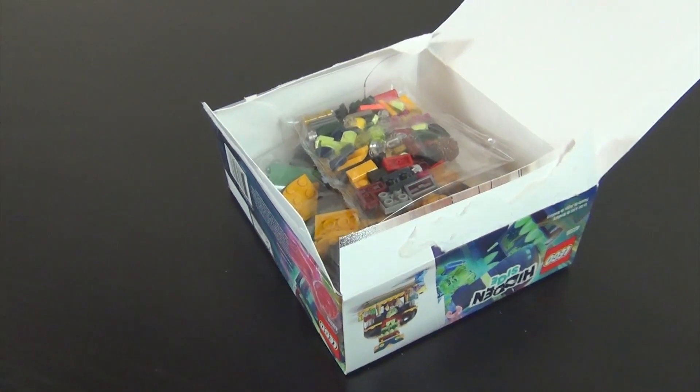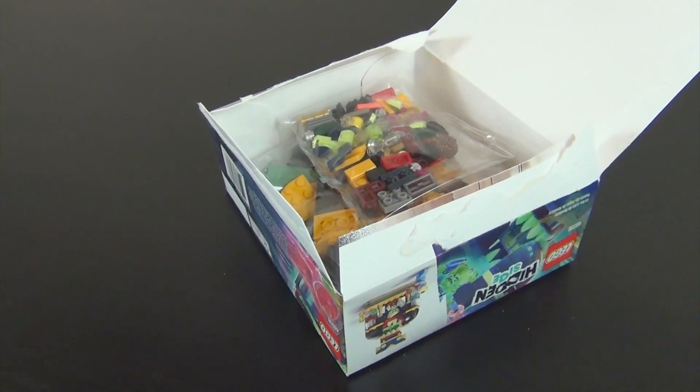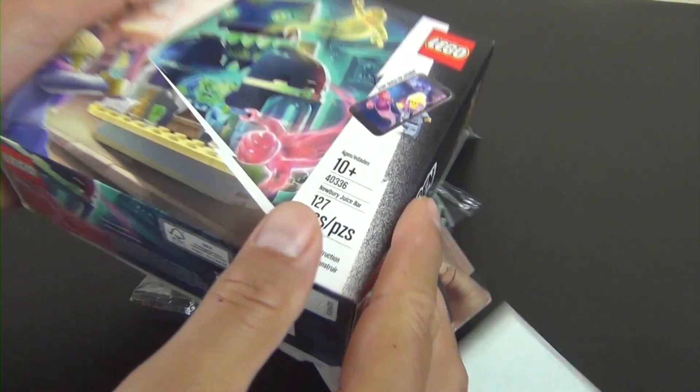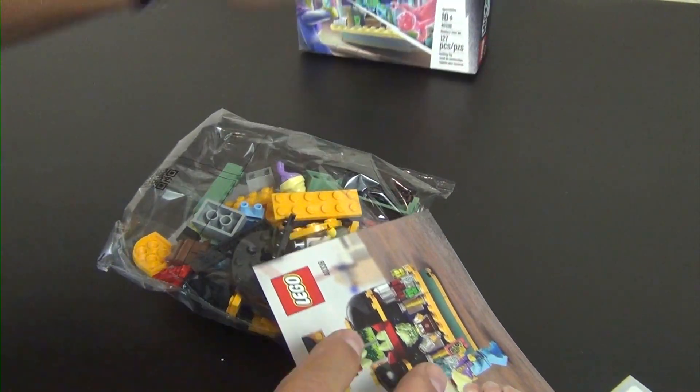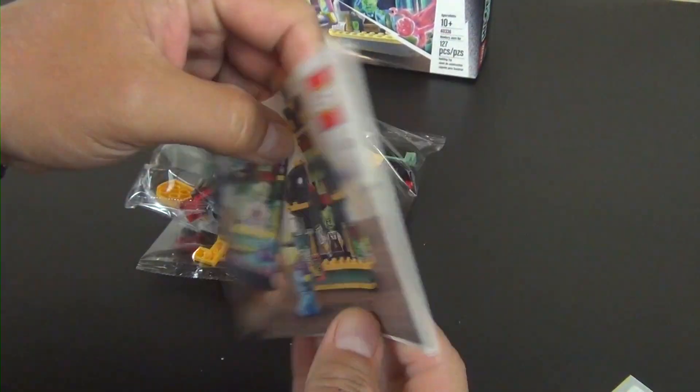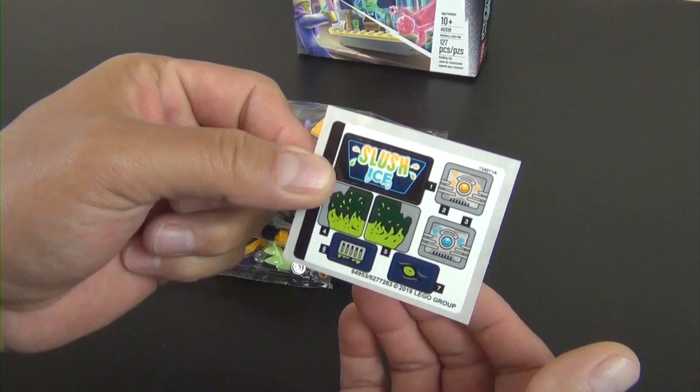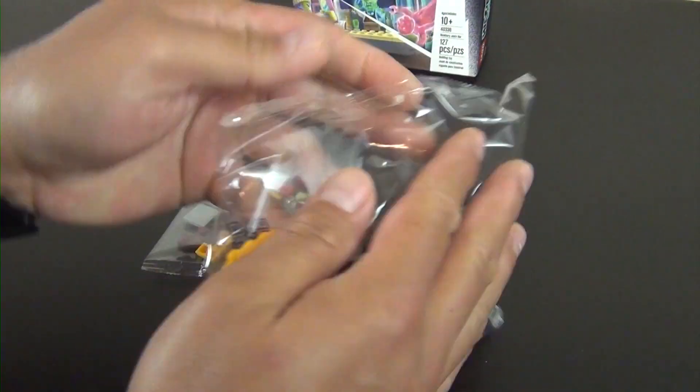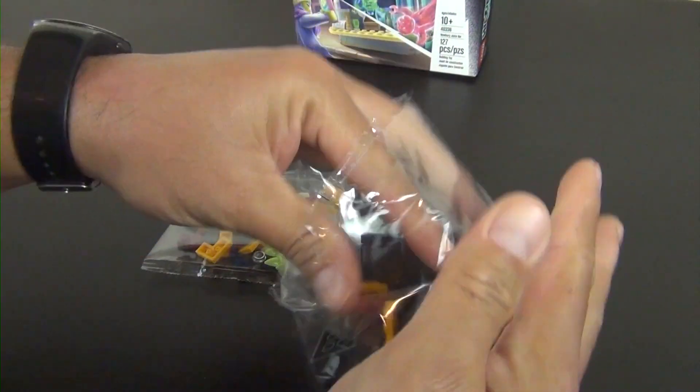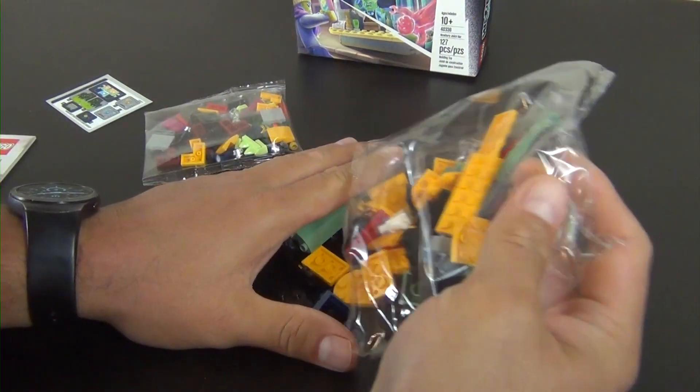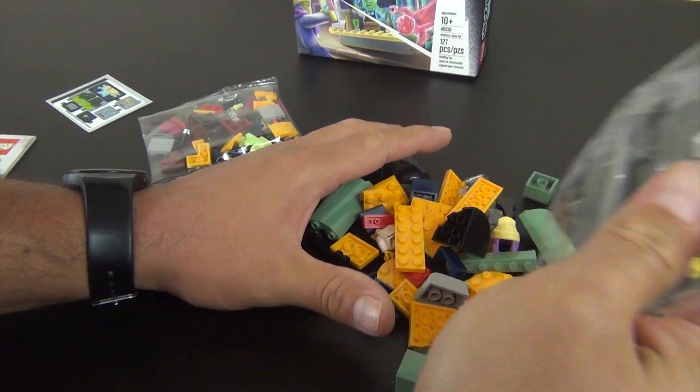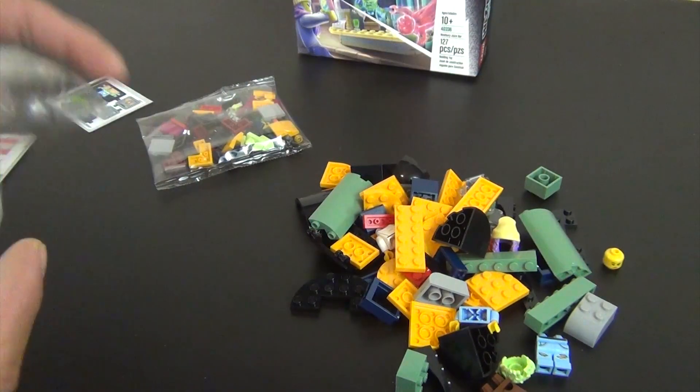Alright, I'm going to move the camera just a bit so we can really get a good idea of what we're doing here. There's our contents: small little instruction book, small set so don't really expect much. There's a small sticker sheet. Not my favorite, I don't like stickers too much but it's alright.